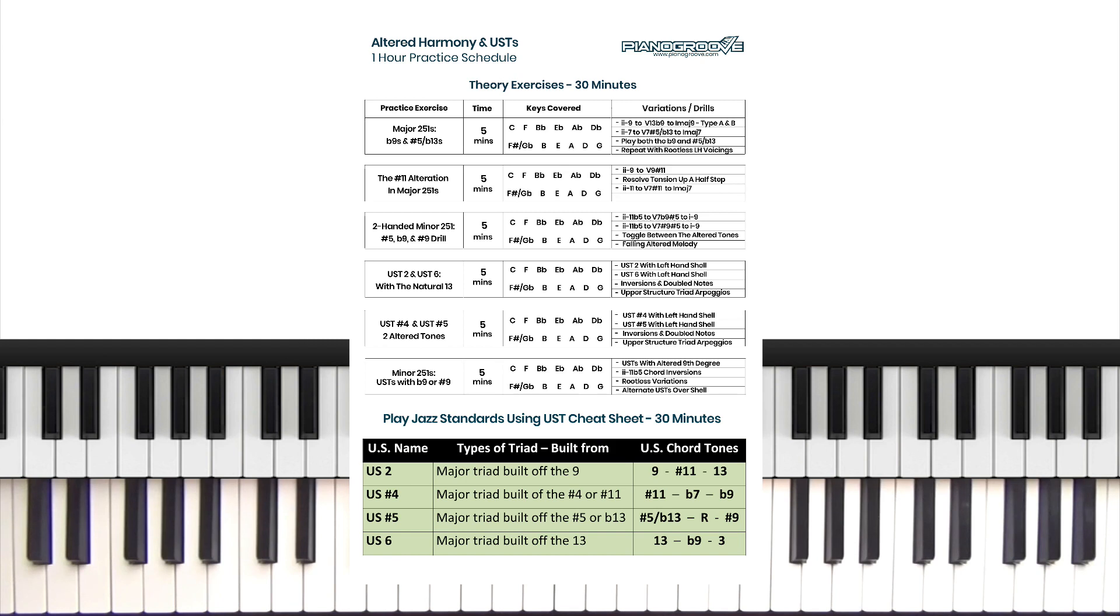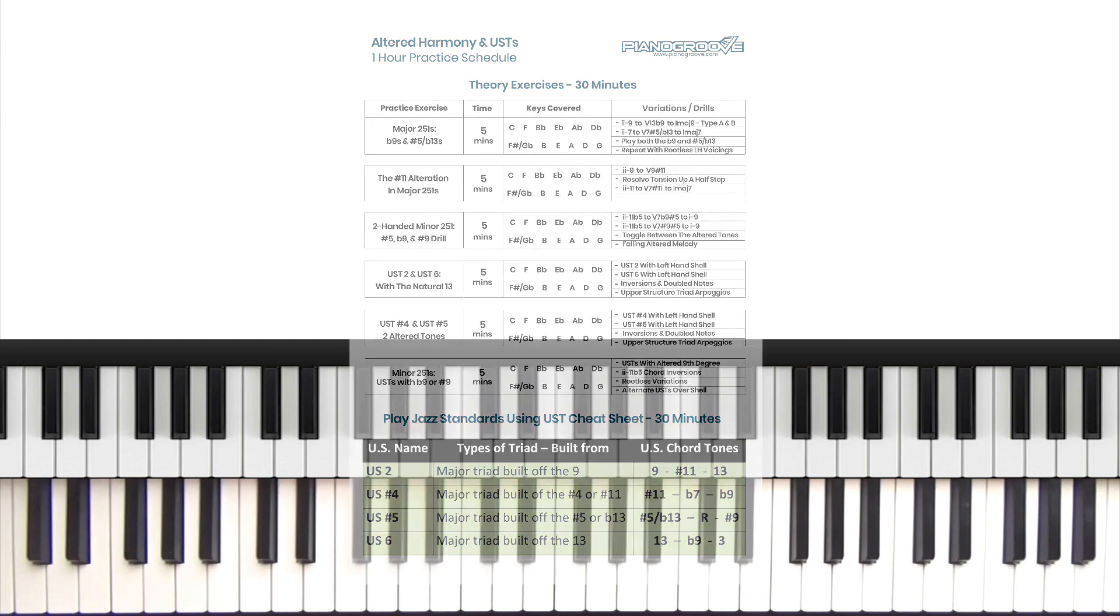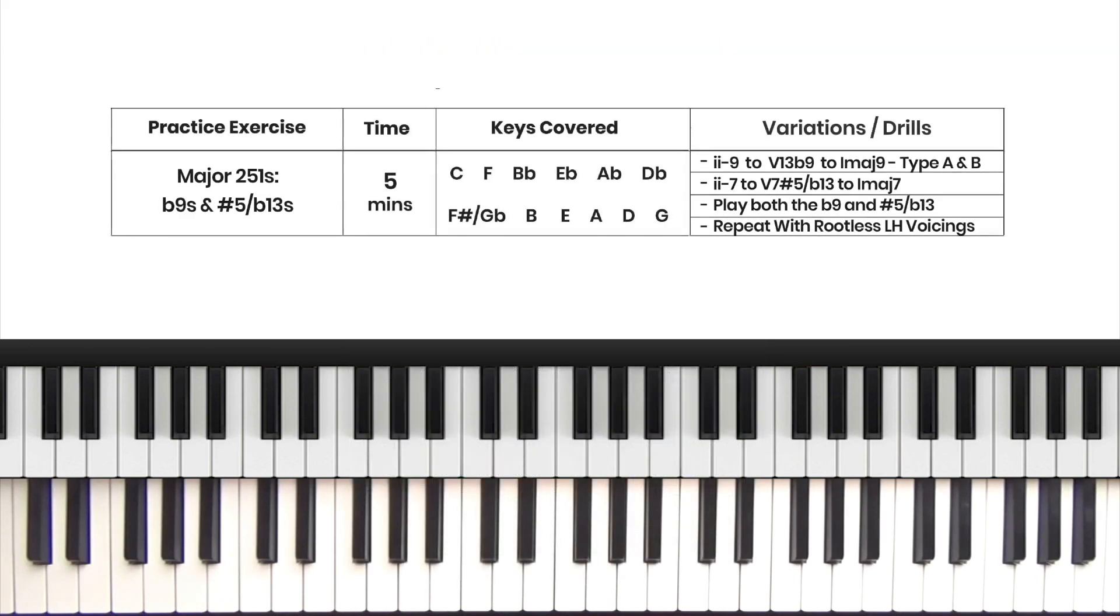For drills 4 and 5, we will take the four common upper structures from the cheat sheet and take these around 2-5-1 progressions in all 12 keys. And finally, for drill 6, we will explore some more advanced applications of upper structures over the minor 2-5-1 progression. So let's get started with practice drill 1.